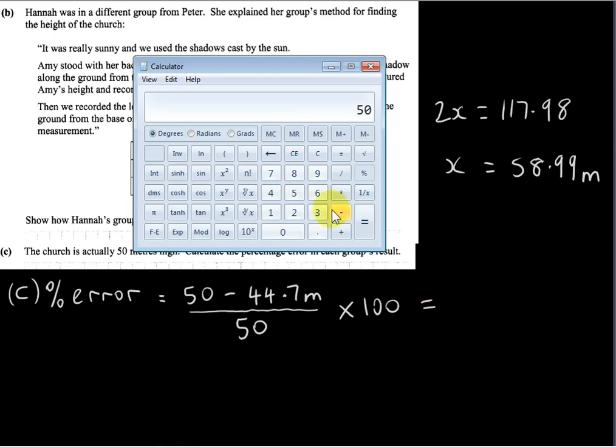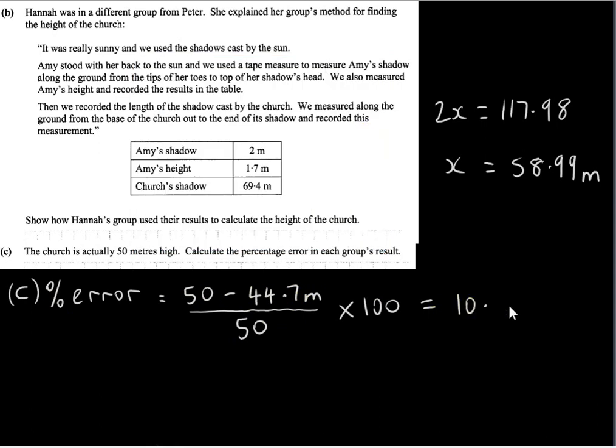So we have 50 minus 44.7. And we have to divide this by 50 and multiply by 100. So the error is 10.6%.